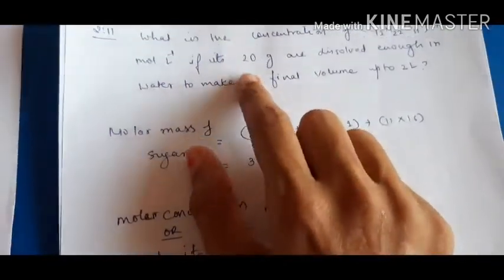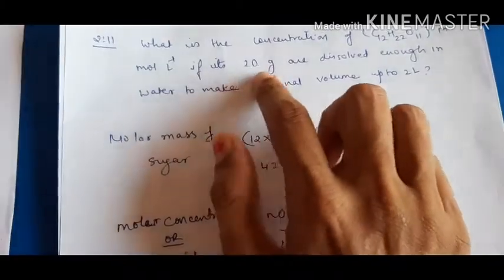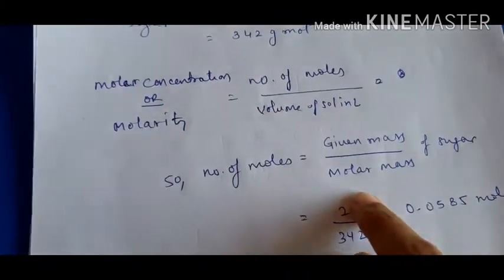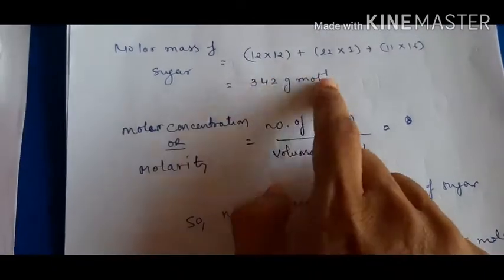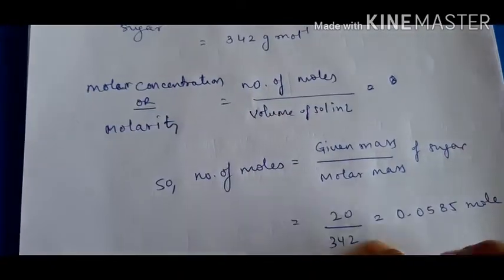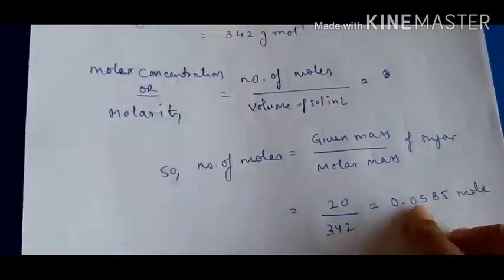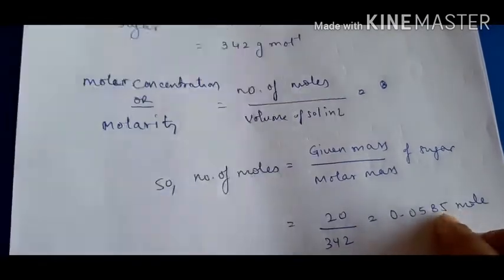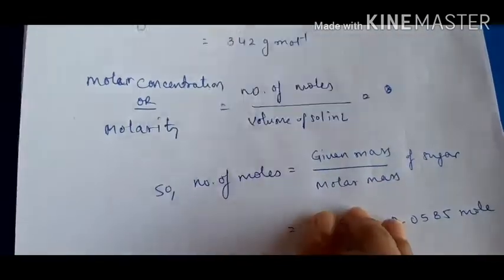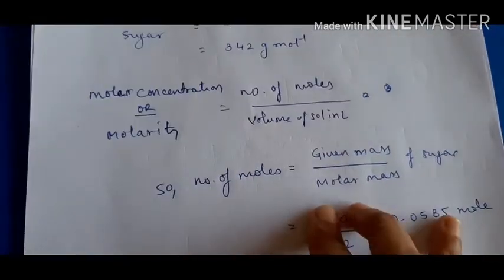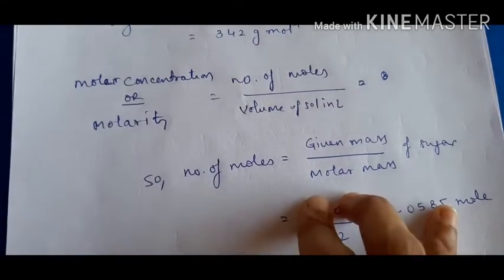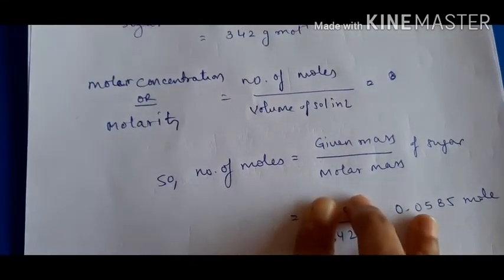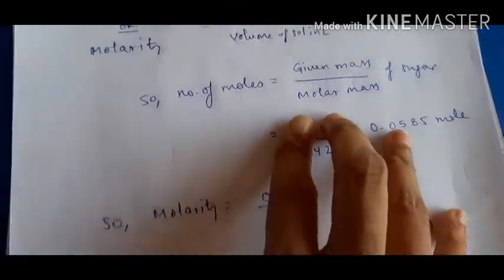Since we are given mass and molar mass instead of number of moles directly, we use: number of moles = given mass / molar mass. Given mass of sugar is 20 g, so number of moles = 20 / 342 = 0.0585. This can be rounded to 0.06 since the next digit is greater than 5.